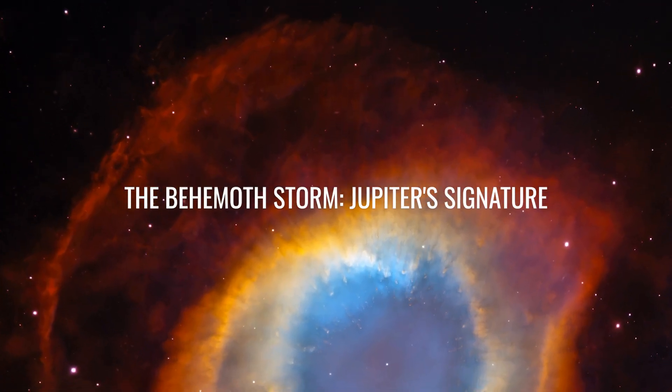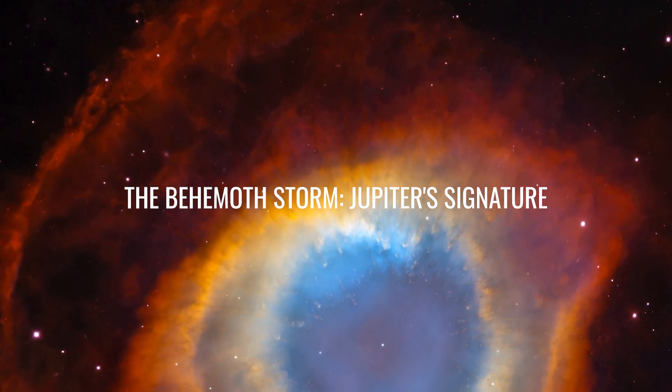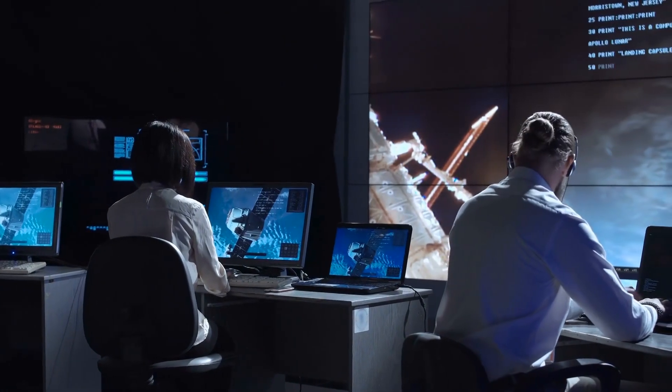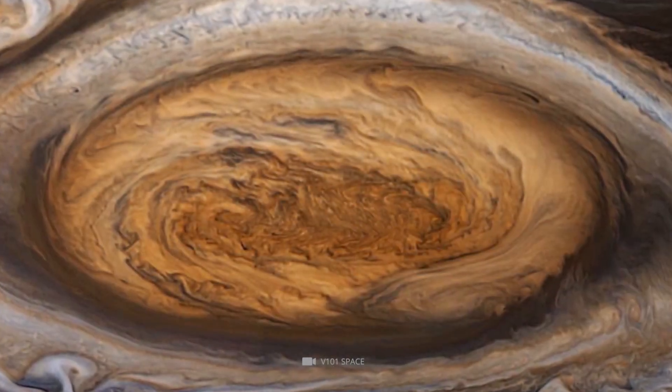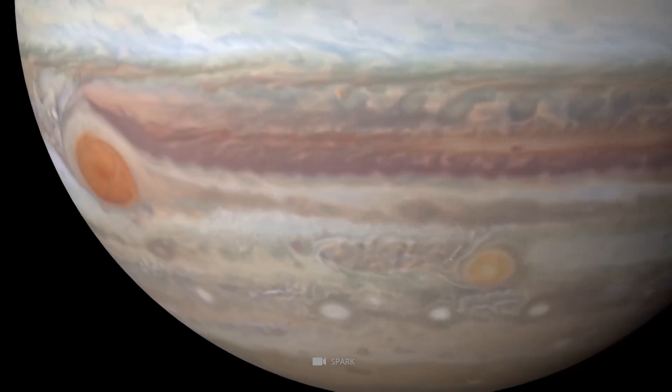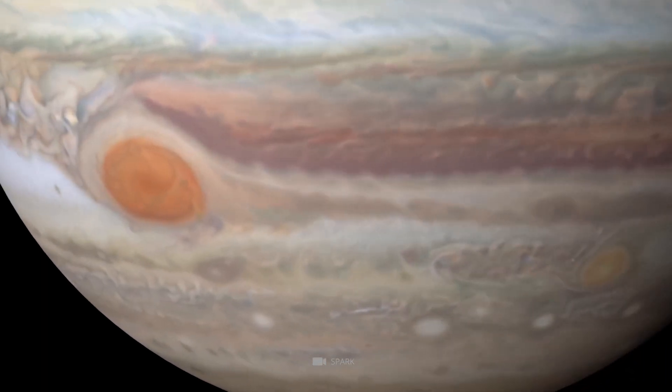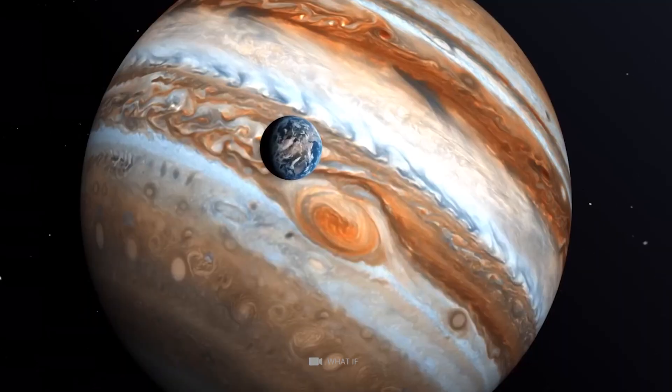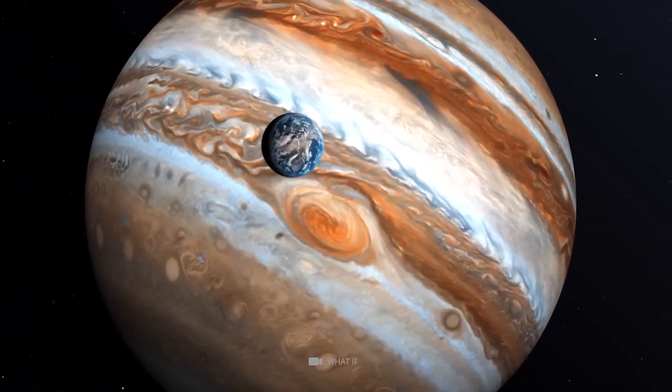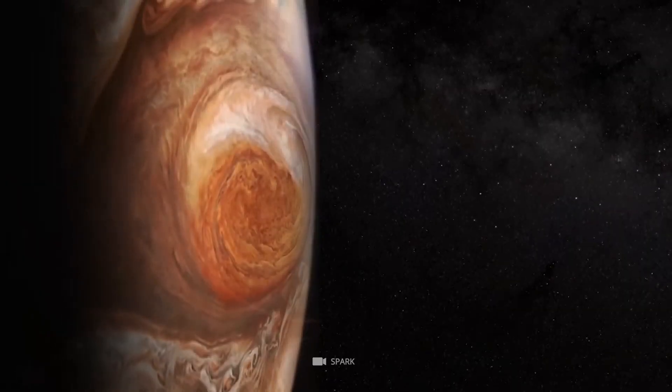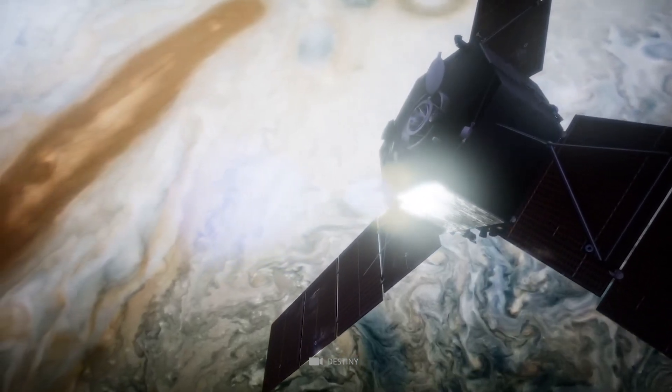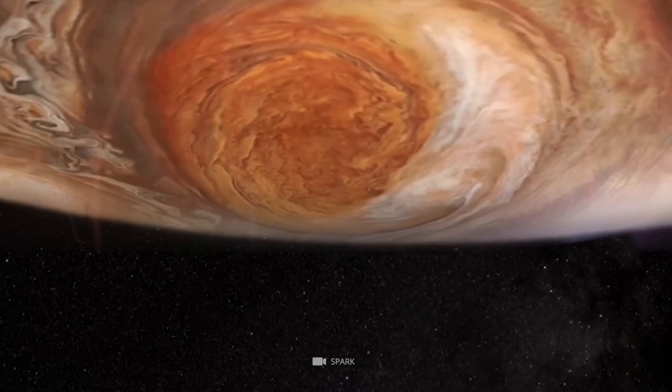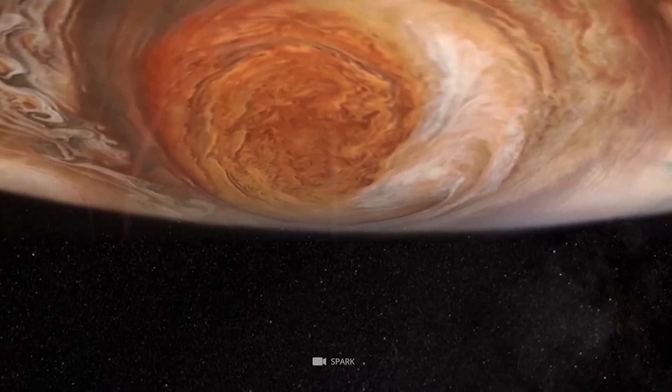The behemoth storm, Jupiter's signature. First observed in 1831 by amateur astronomer Samuel Heinrich Schwabe, the behemoth storm captivated people with its strong winds. The speed of the winds reaches 430 to 680 kilometers per hour. The gigantic red storm is twice as wide as the Earth. Located in the planet's southern hemisphere, Juno got extremely close to Jupiter during its seventh flyby to capture the majestic anticyclone.